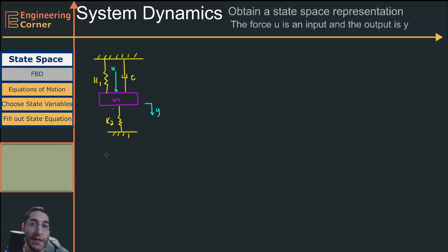We want to obtain a state space representation. So what it boils down to is we want to fill out this equation right here: x dot equals Ax plus Bu. This is the state equation. And the output side of the equation is y equals Cx plus Du.